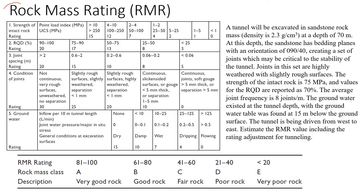This is the chart we call the rock mass rating. The idea is to include the most important factors that affect the strength and stability of rock mass. The first one is the strength of intact rock — very small samples that we test either in point load or unconfined compression tests. If we have a 10 MPa point load index, the rating will be 15. As the point load index decreases — meaning rocks become weaker — the rating will also decrease.